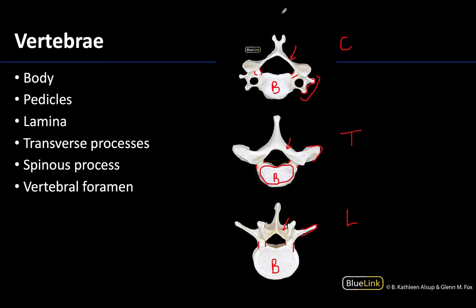The spinous processes are going to be our most posteriorly projecting processes. These are the ones that if you run your hand down the midline of your back, you are feeling those spinous processes — because that's about as posterior as you can get. There are going to be differences between the types of vertebrae, but in the cervical vertebrae you could have an example of a bifid process also associated with the spinous process.